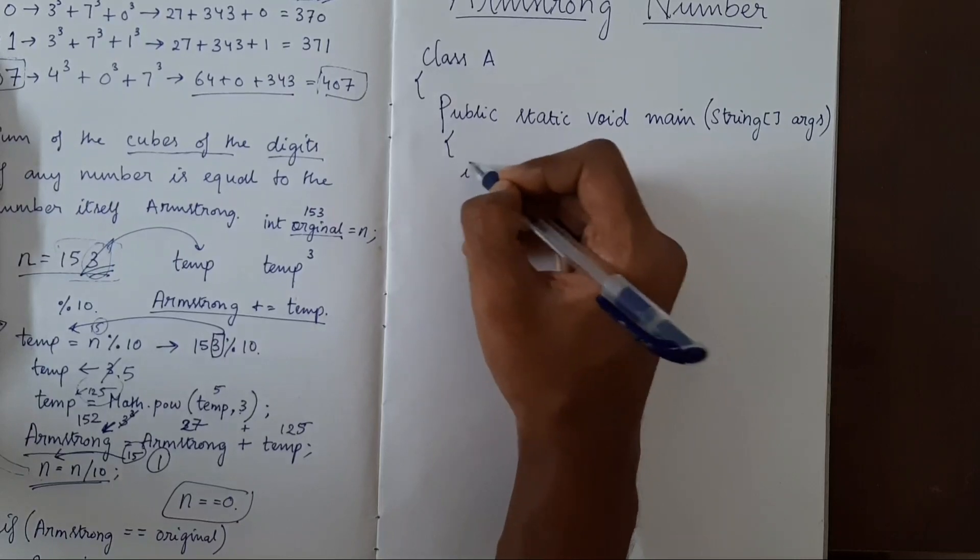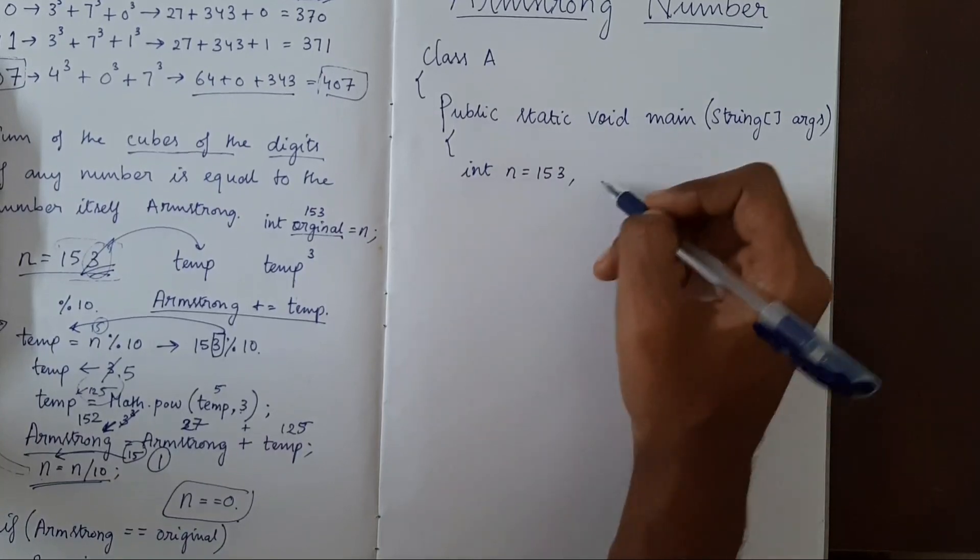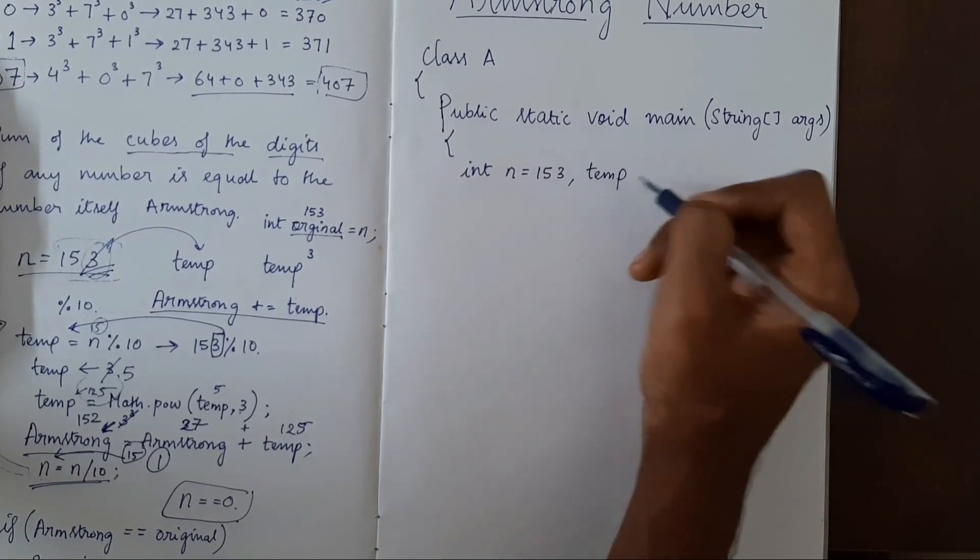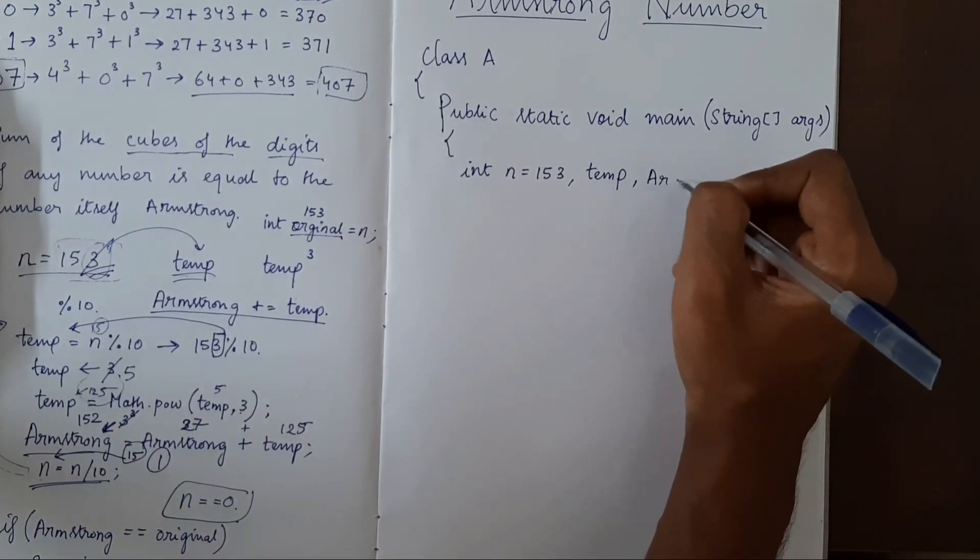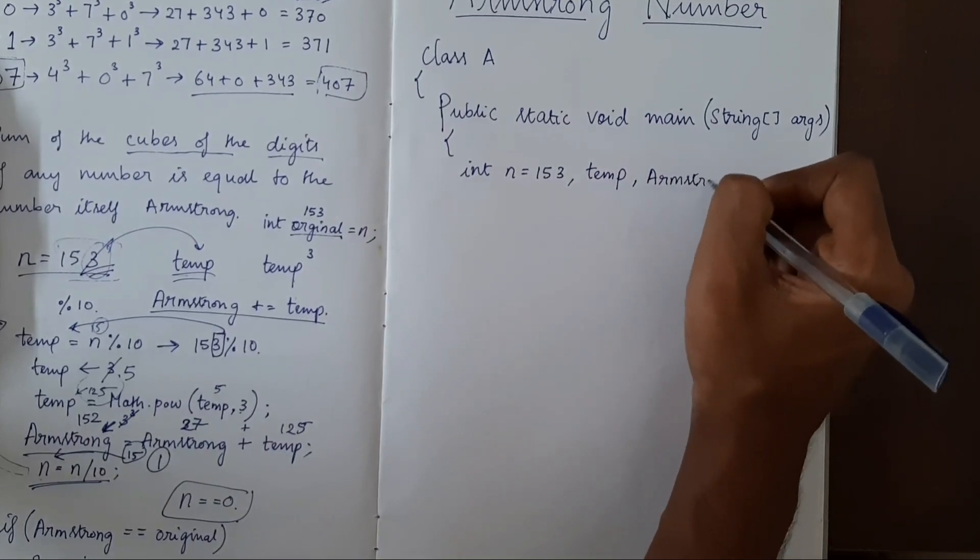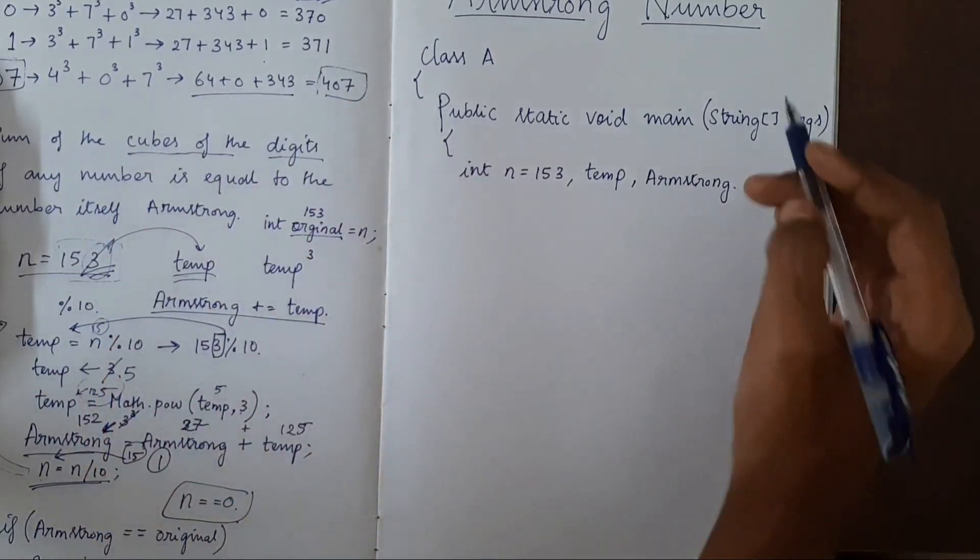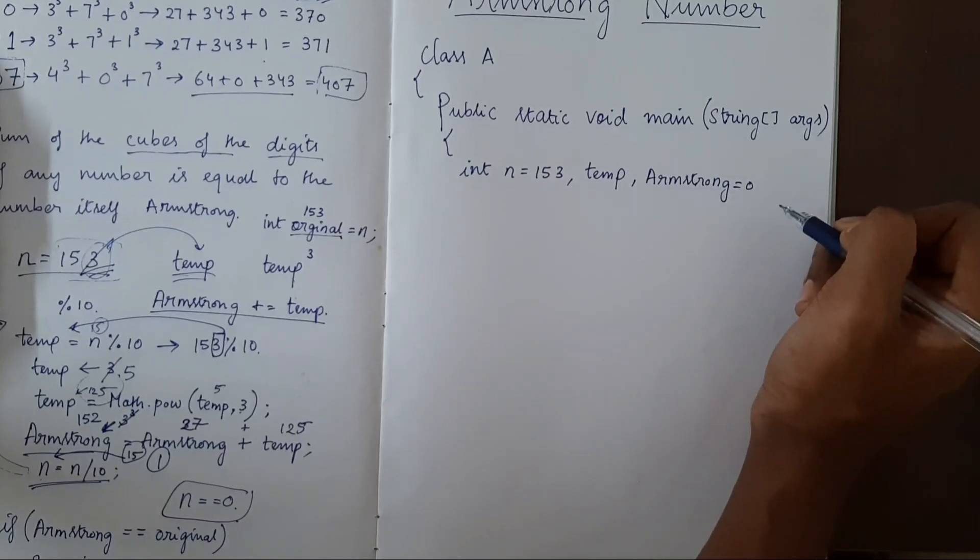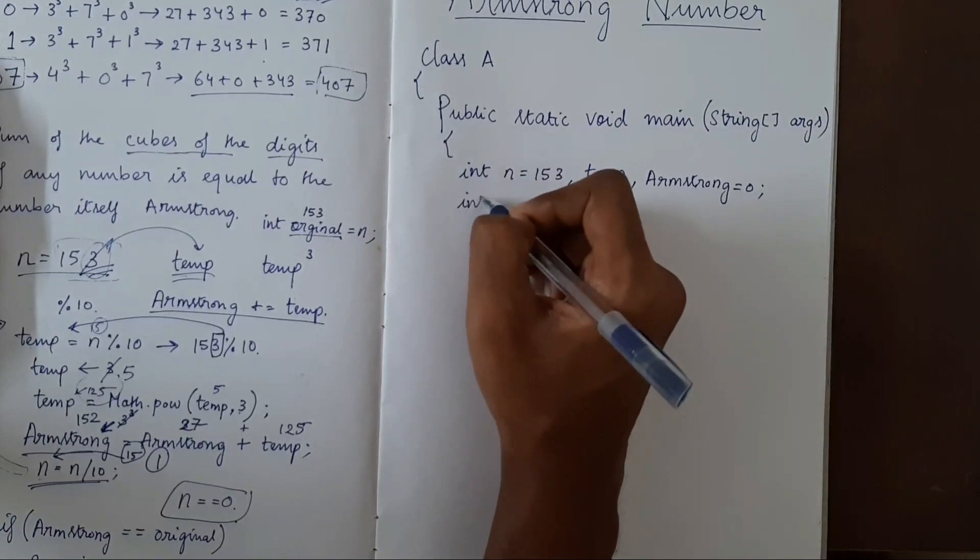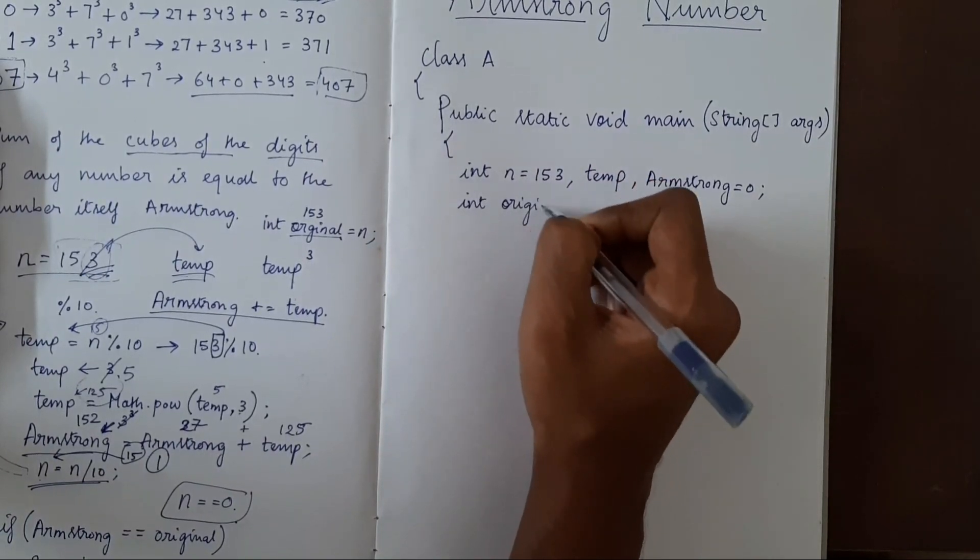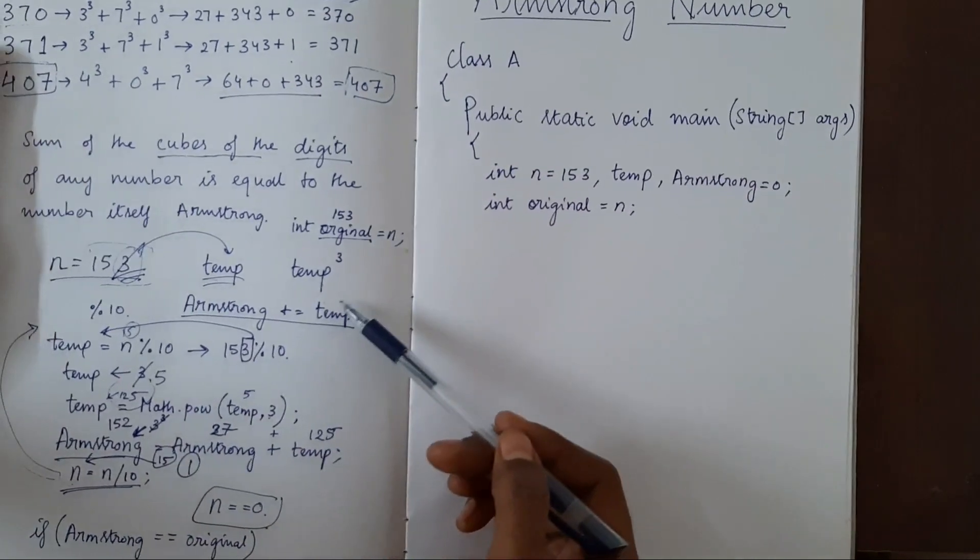What are the variables we need? We need n, which will be having the number which we have to check. We need a temporary variable, in which we'll store each digit. We need a variable called Armstrong, in which we will store all the addition of each digits, which will be initially 0 because we are going to add numbers into it. And then we'll have another variable, original, and we'll store n into it.